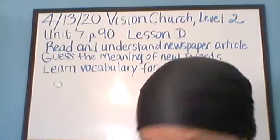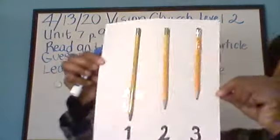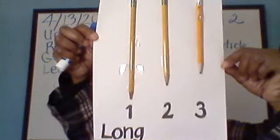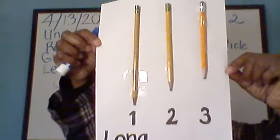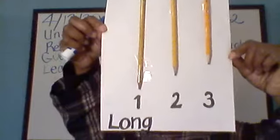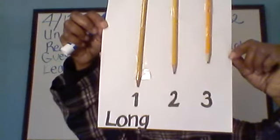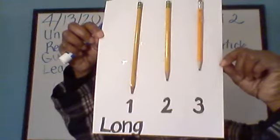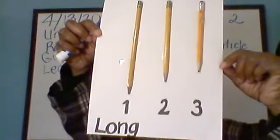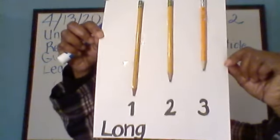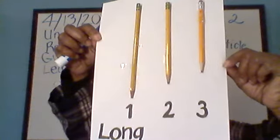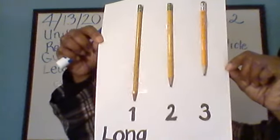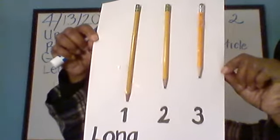One more. We've got three pencils here. The adjective is long. Which pencil is long? Which pencil is longer? Which pencil is the longest? We're comparing three pencils, so we need the superlative form of long, which is the longest. And the answer to that question is pencil number one.